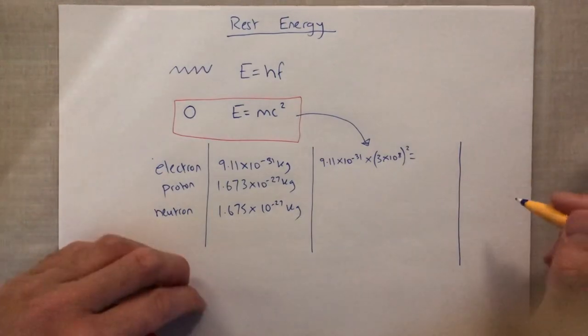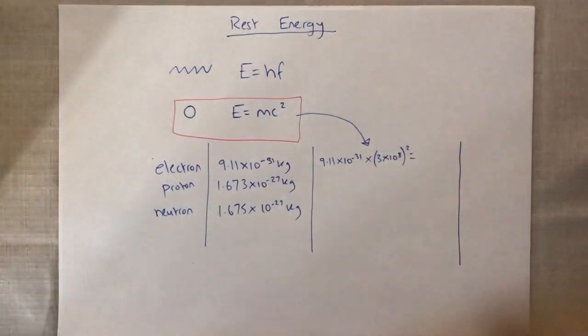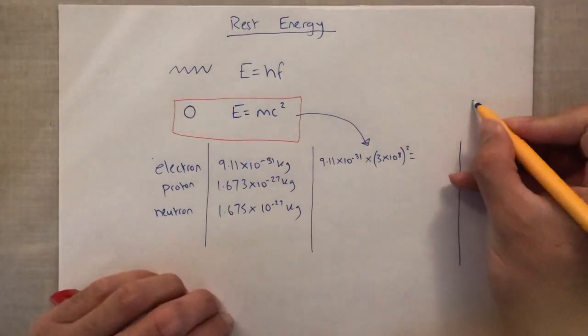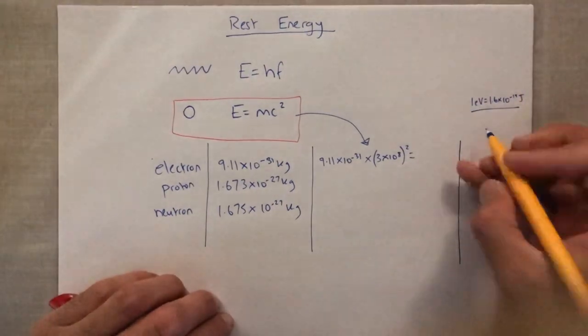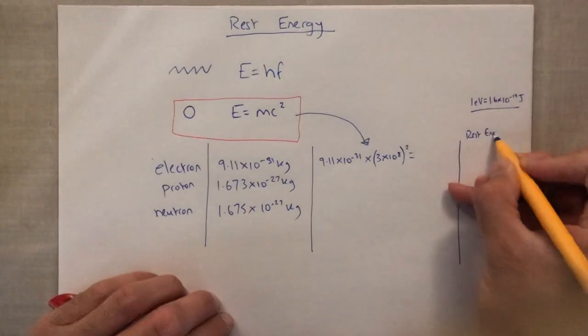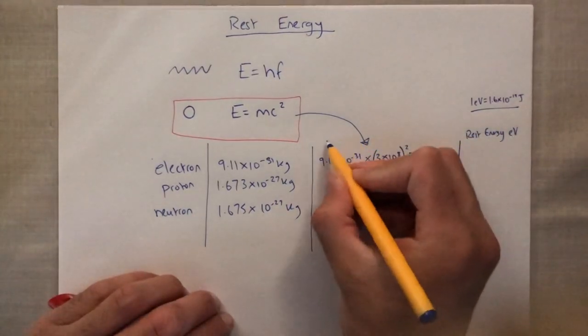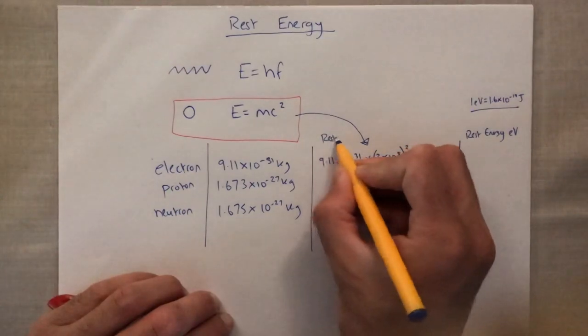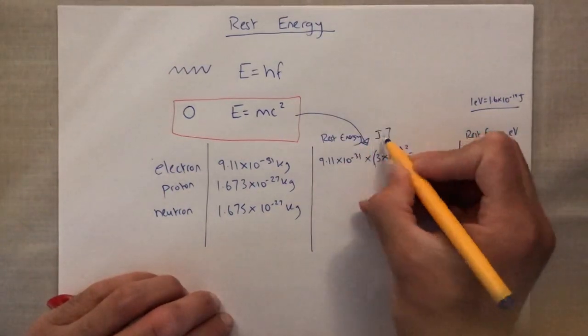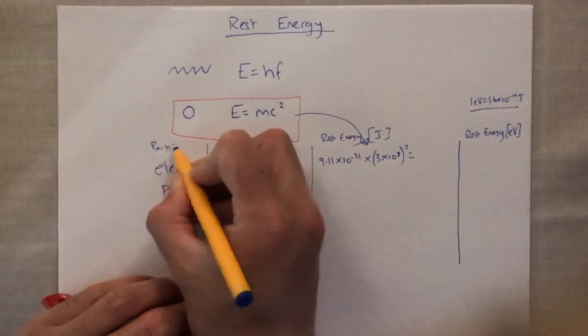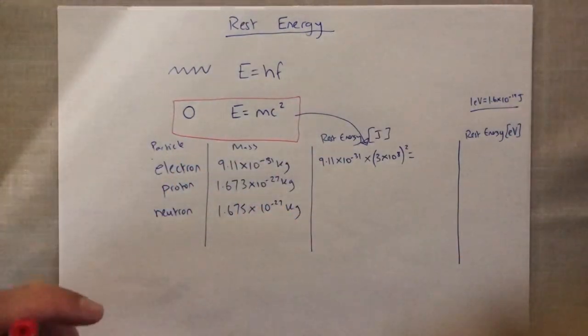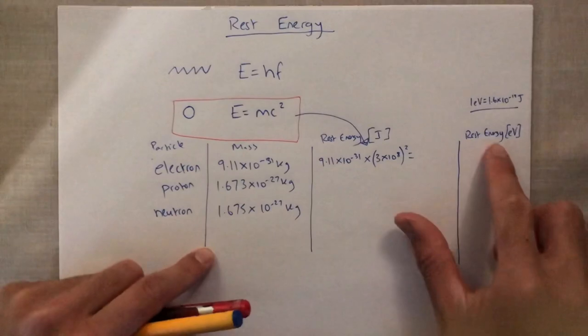I am going to draw another column over here. This column is going to put it into electron volts because most of the time these energy values are in electron volts. So we're going to use the conversion 1 eV is equal to 1.6 times by 10 to the minus 19 joules. So this is our rest energy in electron volts, this one is the rest energy in joules, and this here is the mass. And we've got the particles over here.